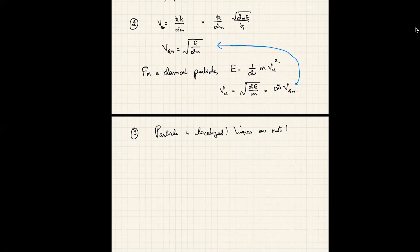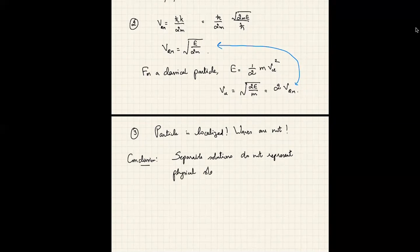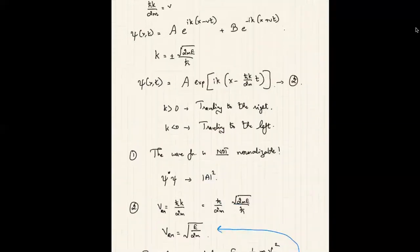We will try to understand these subtleties one by one. At this point it is clear that the separable solutions we have do not represent physical states — they cannot represent physical states because they are not normalizable.